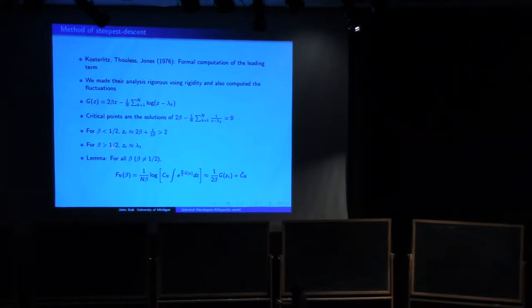On the other hand, when beta is bigger than half, then approximating this by semicircle law doesn't work. Instead, what one can show is that z is going to be very close to all of these eigenvalues. In particular, it will be very close to the largest eigenvalue. It's going to be always bigger than lambda 1, but the difference is smaller than the difference between lambda 1 and lambda 2. So that's really sticking to lambda 1.